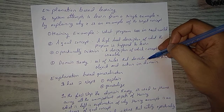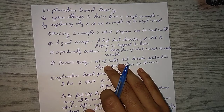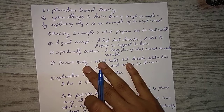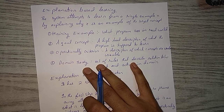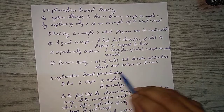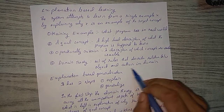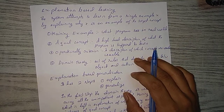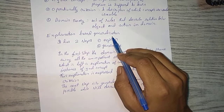Next we have domain theory: a set of rules that describe the relationship between training objects, actions, and the domain. All the rules and the logical part of the system are stored in domain theory, and it also describes relationships between objects, actions, and the domain.